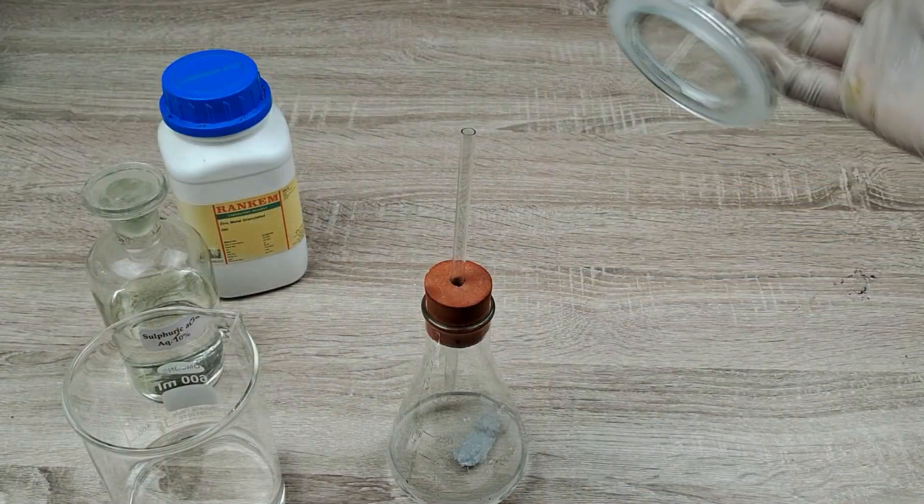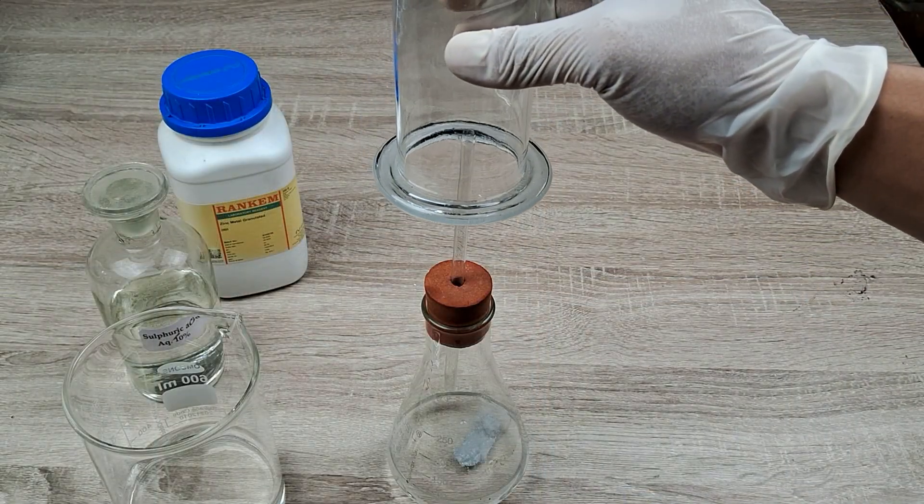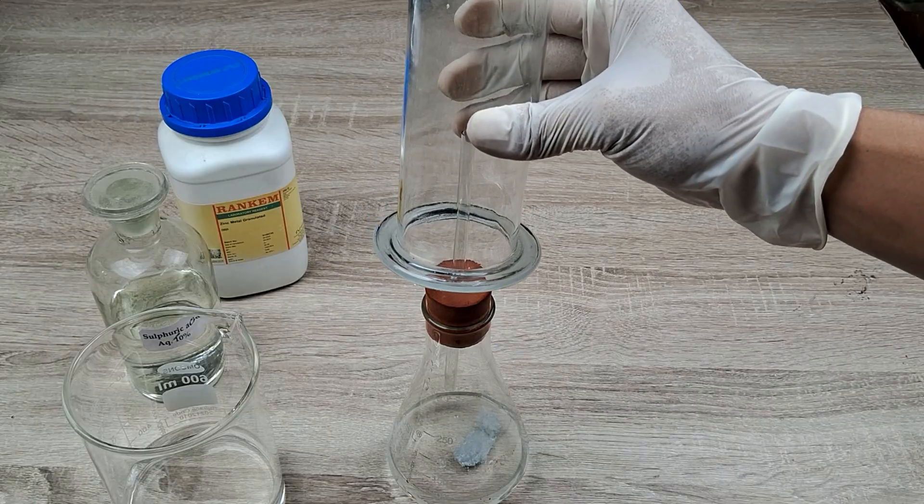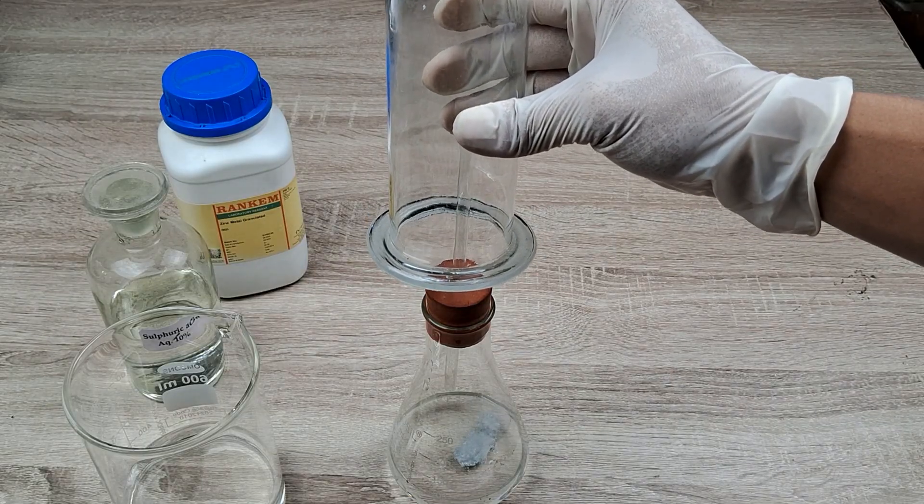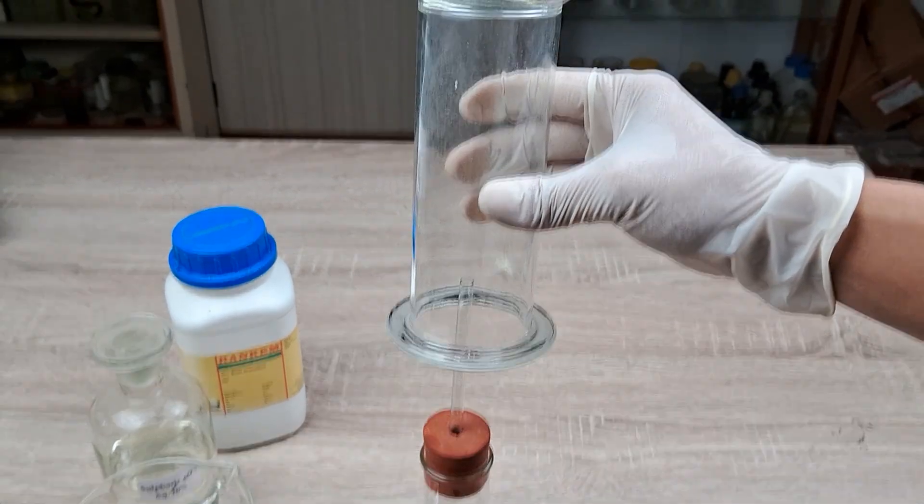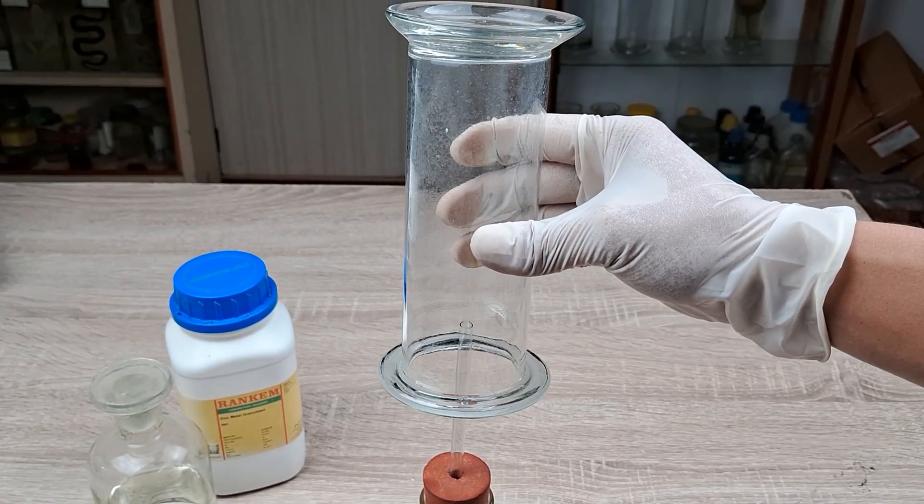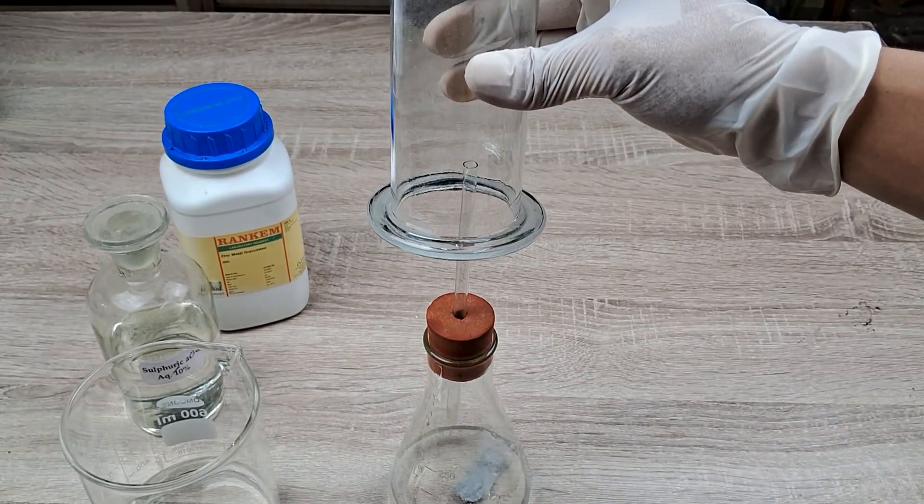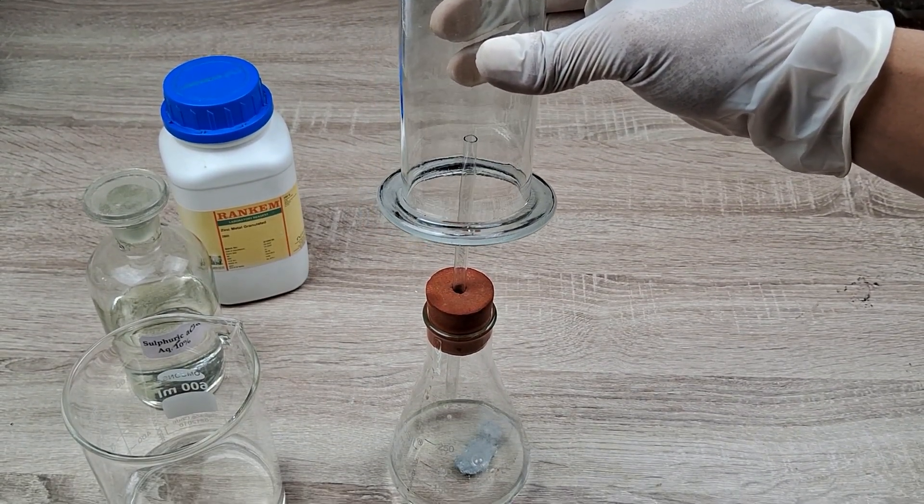After 30 seconds to a minute, hold the gas jar in the inverted position over the end of the tube in such a way that a few centimeters of the tube goes into the mouth of the gas jar. Collect the hydrogen gas in the inverted gas jar for about 1 to 2 minutes, by which time the jar would have been fully filled with the hydrogen gas.